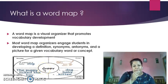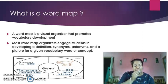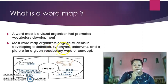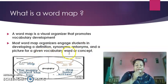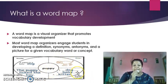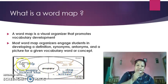Word maps help you develop your vocabulary — it could be your sentence structuring, or you can learn the definition of a word using the dictionary. You will also learn synonyms, which are words with the same meaning, antonyms, which are words with opposite meanings, and draw a picture for the given vocabulary word or concept. In today's classwork we won't be drawing pictures, but you'll fill in the other sections.